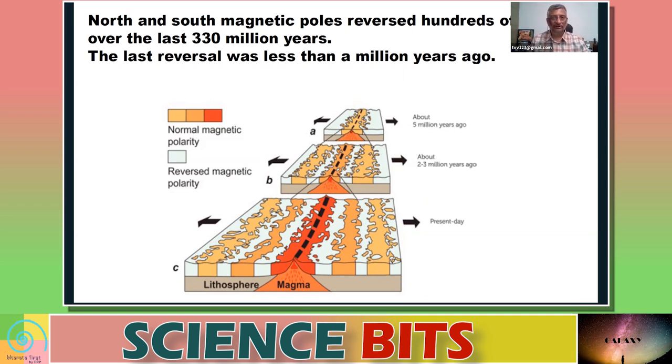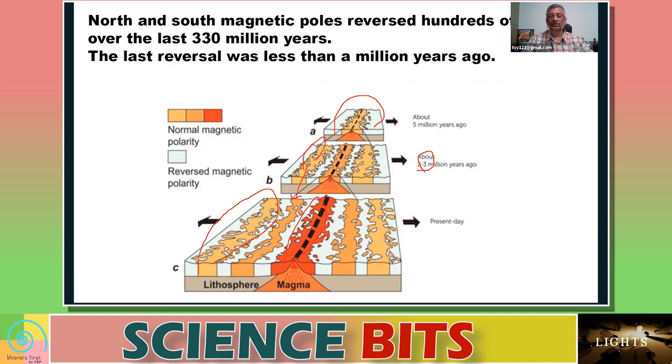For years and years it's coming out and that is getting deposited under the sea. So if you go underneath and look at the sea floor which have been formed in the last many million years ago, let's say for example five million years to today. What was formed five million years ago is here, what was formed about two to three million years ago is here, and this is currently getting formed. So now I can look at these rocks.